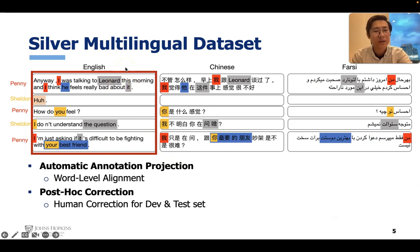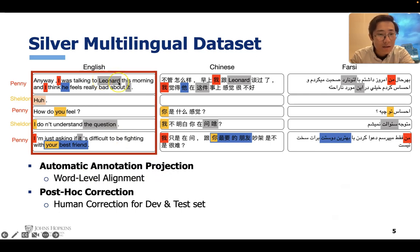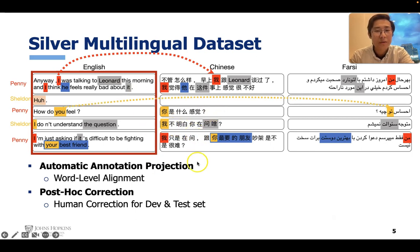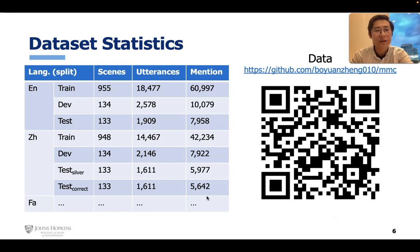Assuming we have already obtained the English data, we still want to build the silver multilingual data. So we perform automatic annotation projection based on word-level alignment. All annotations have been highlighted in different colors, and we can project to Chinese using the alignment, and also to Farsi. Of course, the projection can be noisy, so we perform human correction on the dev and test sets to ensure a fair evaluation. This is the statistic of our dataset — we get over 1,200 scenes with a large number of utterances and mentions. You can refer to the paper for details and download the data there.